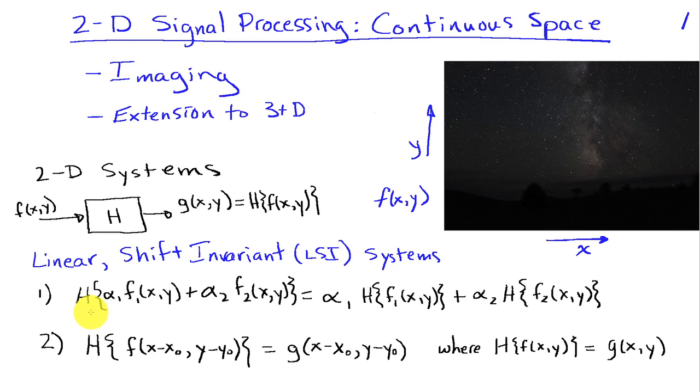And it says that if I apply as the input to my system, a weighted sum of two images, and the weights are alpha 1 and alpha 2, the images are F1 and F2, if I apply a weighted sum as the input to my system, my output will be equal to a weighted sum of the outputs of the individual images. So this is a linearity property.